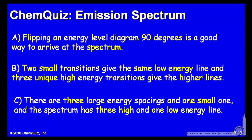Some possible explanations for each answer. A, when you flip an energy level diagram 90 degrees, that's a good way to arrive at what the spectrum looks like. Or B, two small transitions give the same low energy line, and three unique high-energy transitions give the higher lines. Or C, there are three large energy spacings and one small one, and the spectrum has three high and one low energy line. Think about those three possible explanations and make another selection.